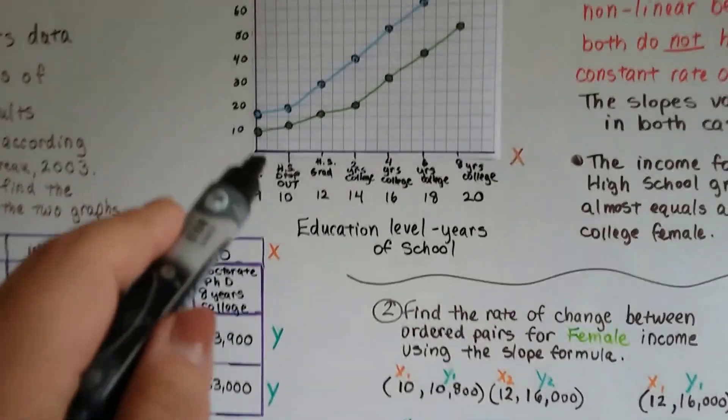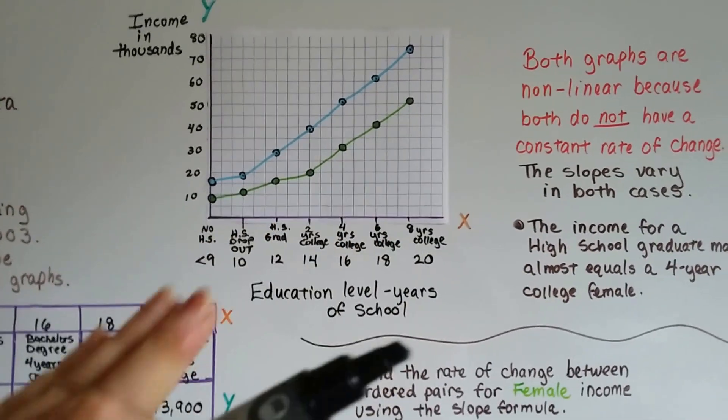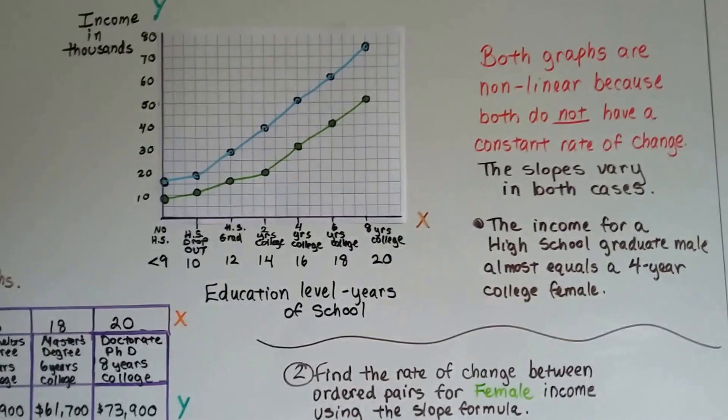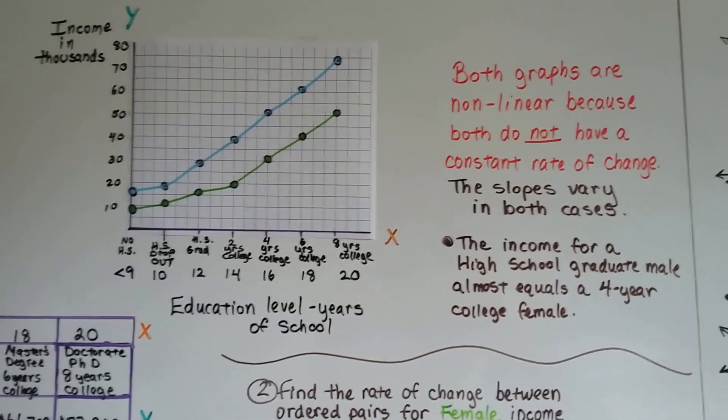And we can look at the line and tell it's not constant because it goes up and down and up and down. It's not like a beautiful, perfectly straight line. So both graphs are non-linear because they both do not have a constant rate of change.